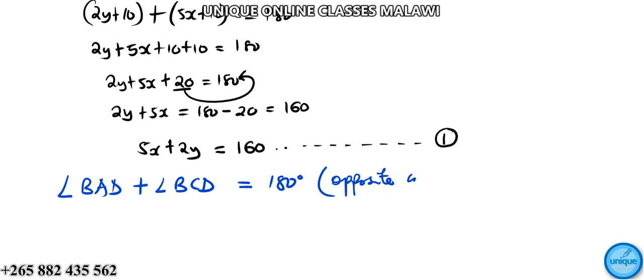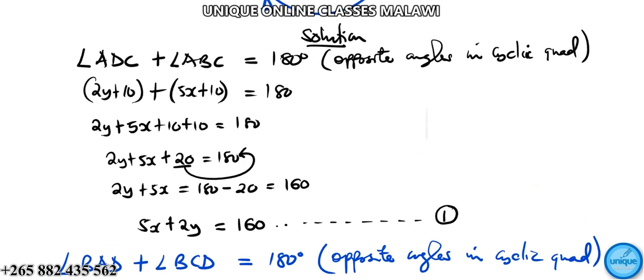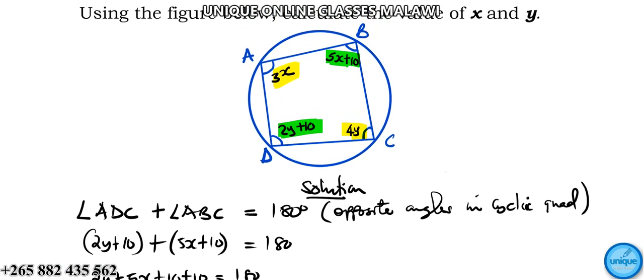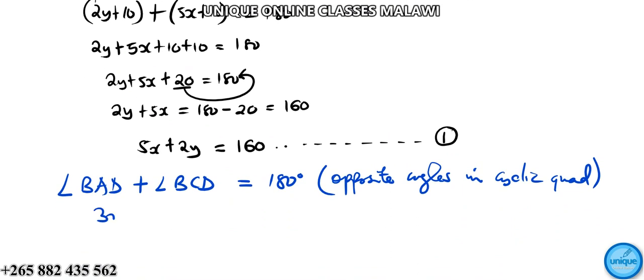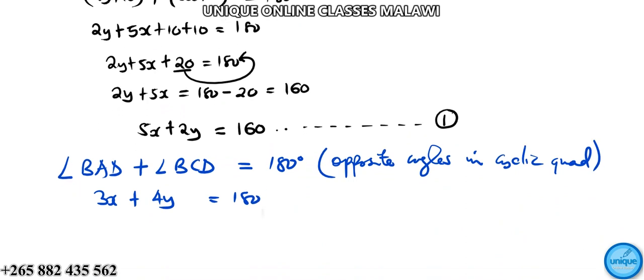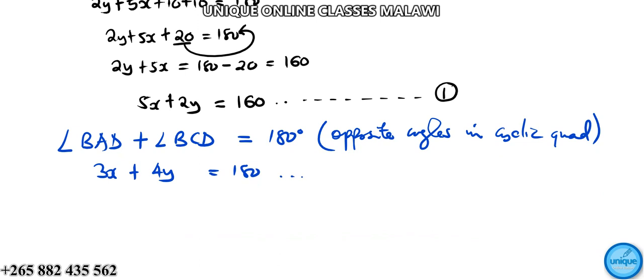Angle BAD is 3x and angle BCD is 4y. So we have 3x plus 4y equals 180 degrees. This is equation number 2.